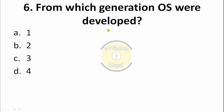Question: From which generation were operating systems developed? OS stands for operating system. Full forms of OS, RAM, ROM and other computer terms are important — maximum probability these are asked. The operating system was first developed in the third generation of computer. So option C is the correct answer.